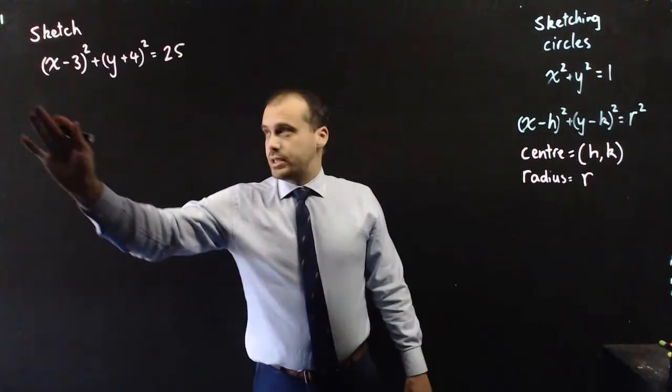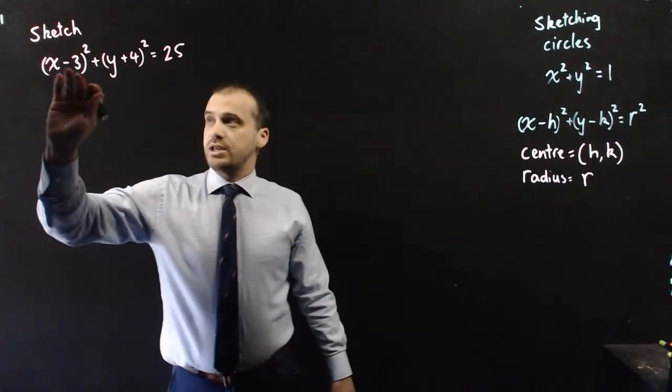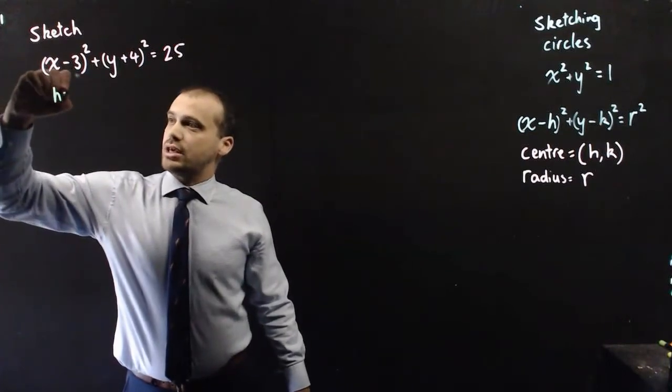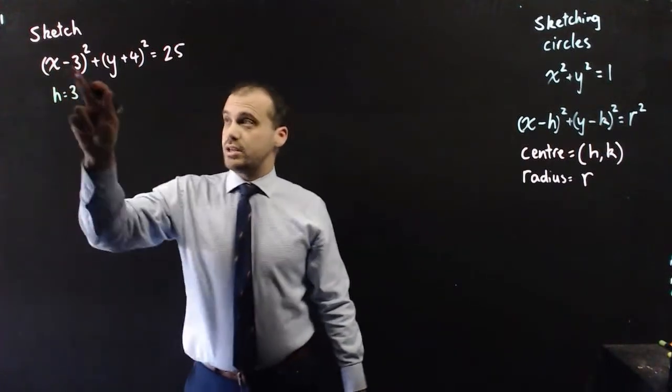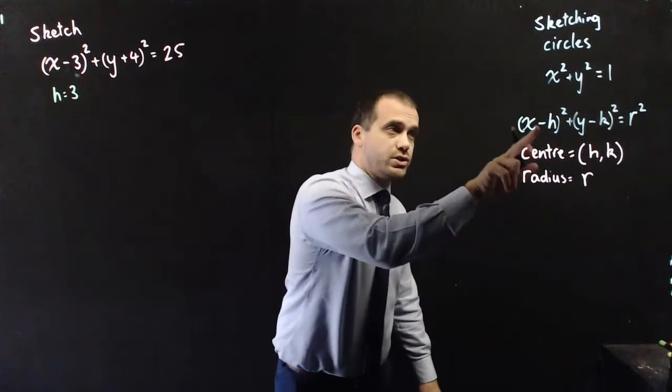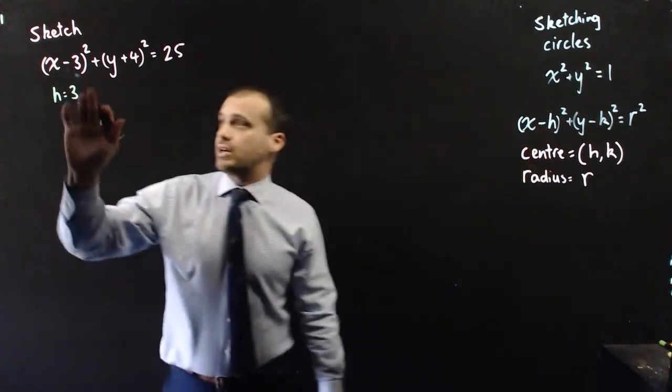So, let's just take a look at one. So, when we consider this equation, we have an h value, h equals 3, not negative 3, right, because our initial equation is negative h, so the h value is positive here.